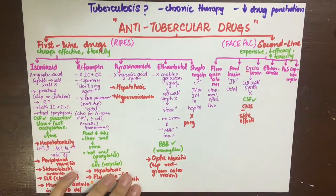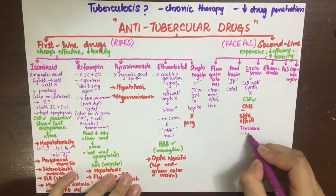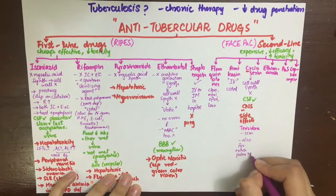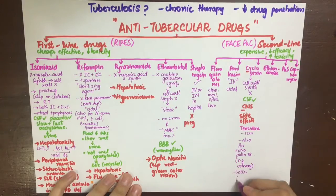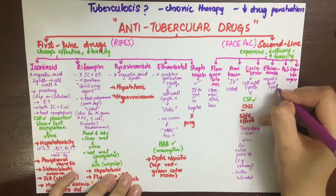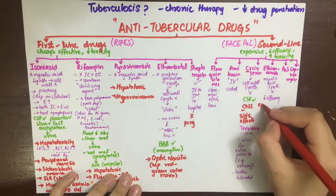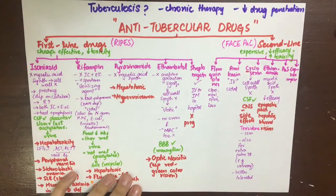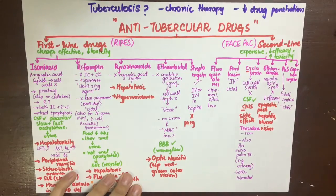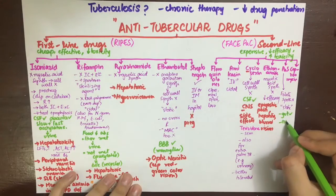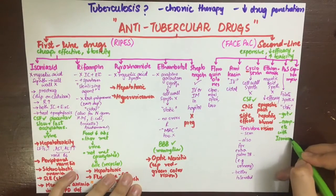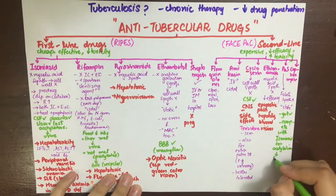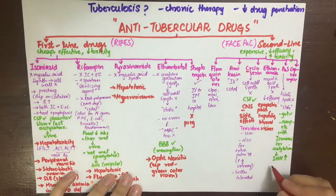Terizidone is similar to cycloserine and can be used in extra-pulmonary TB such as urinary tract TB; it is better tolerated than cycloserine. Ethionamide has a similar structure to isoniazid but with reduced efficacy; it also inhibits mycolic acid synthesis, with side effects including epigastric pain, hepatitis, and blurred vision. Para-aminosalicylic acid (PAS) resembles sulfonamides in structure, so it inhibits folate synthesis. It cannot cross the blood-brain barrier, is well absorbed from the gut, and is metabolized by acetylation in the liver — competing with isoniazid for acetylation and thus increasing isoniazid plasma levels. Side effects include GI disturbances, hepatic damage, and thrombocytopenia.